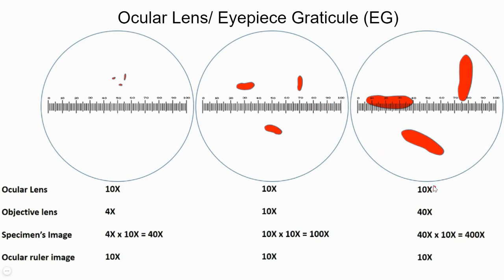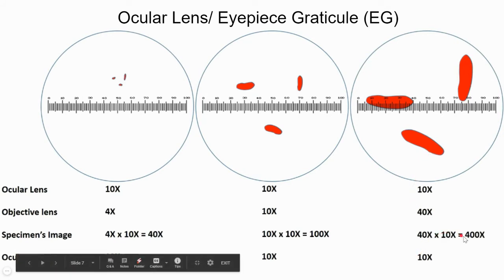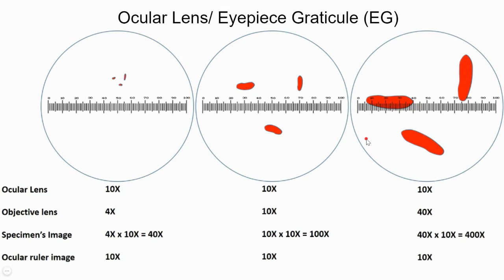In the third case, using the same ocular lens with the same eyepiece graticule, the specimens appear bigger again because the objective lens is now 40x, giving an overall magnification of 40 × 10 = 400x. Across all three cases, we notice that the specimen size increases as we increase the objective lens magnification, but the eyepiece graticule scale size remains the same throughout — because the eyepiece graticule is fixed to the eyepiece lens, which we are not changing.